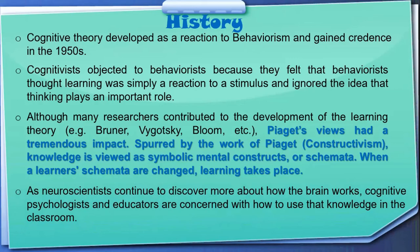As neuroscientists continue to discover more about how the brain works, cognitive psychologists and educators are concerned with how to use that knowledge in the classroom. Gaining knowledge in the classroom takes place because of how the brain processes information. In the development of cognitive science and cognitive theory, neuroscience plays a very important role — helping us understand how the brain works and how psychological and neural factors are involved when we acquire knowledge in the classroom.